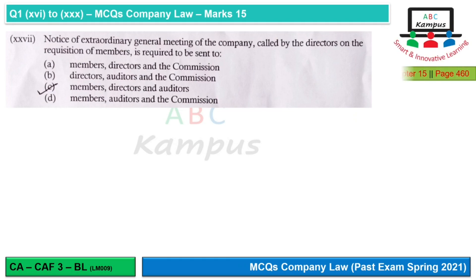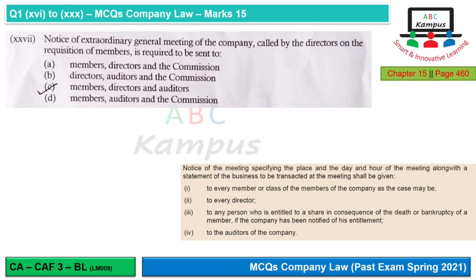Question 27: Notice of an extraordinary general meeting of a company called by directors on the requisition of members is required to be sent to every member, every director, legal representatives or official assignees in case of death or bankruptcy, and auditors. There is no requirement to send notice to the Commission. Option C would be correct.